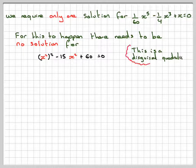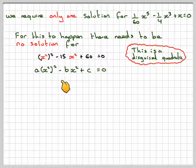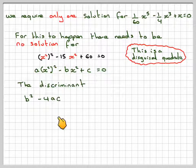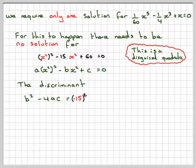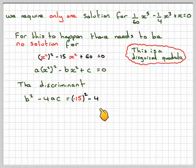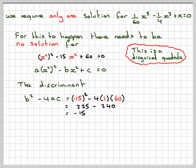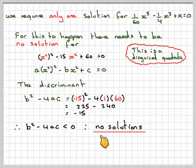This is a disguised quadratic. Comparing it with ax² - bx + c = 0, or replacing x² with a different variable if preferred, the discriminant b² - 4ac gives (-15)² - 4 × 1 × 60 = 225 - 240 = -15. So the discriminant is negative. Therefore b² - 4ac < 0, meaning no real solutions.